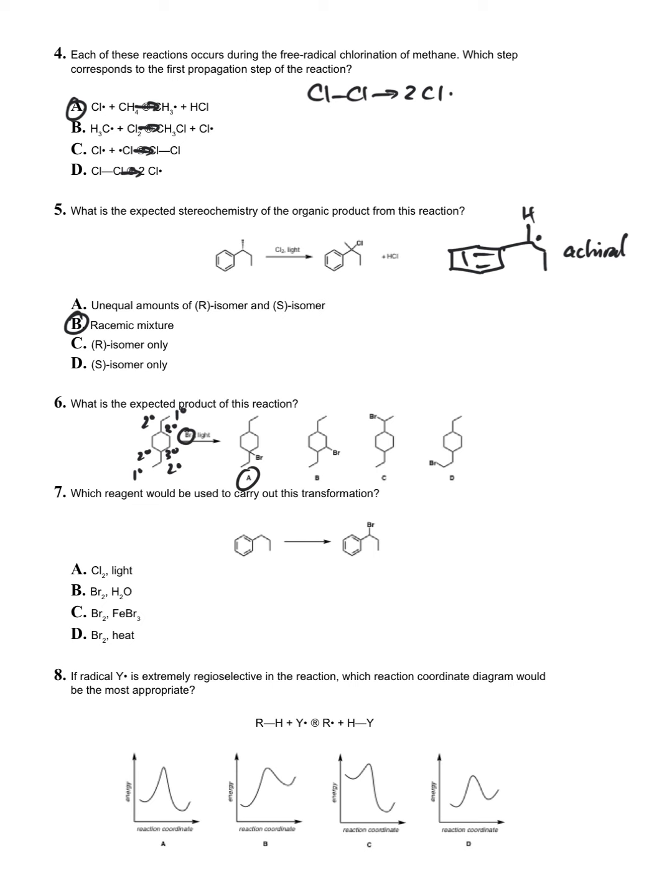Question seven: which reagent would be used to carry out the transformation? This is a radical bromination, so it's a CH substitution, and what we've been learning are the conditions for that: bromine and heat. Question eight: if radical Y is extremely regioselective in the reaction, we can think of bromine under that regime. Which reaction coordinate diagram would be the most appropriate? If it's regioselective, it has to be going uphill in energy to form that radical intermediate.